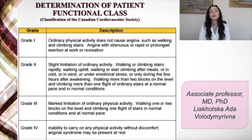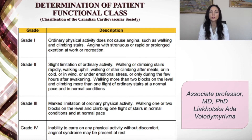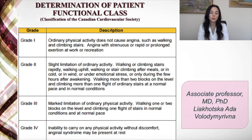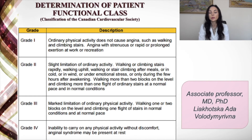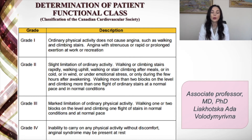Next is the determination of patient functional class using the Canadian Cardiovascular Society classification, which has four grades. Grade 1: ordinary physical activity does not cause angina, such as walking or climbing stairs. Grade 2: slight limitation of ordinary activity. Grade 3: marked limitation of ordinary physical activity — walking one or two blocks on the level and climbing one flight of stairs at a normal pace. Grade 4: inability to carry on any physical activity without discomfort; anginal symptoms may be present even at rest.